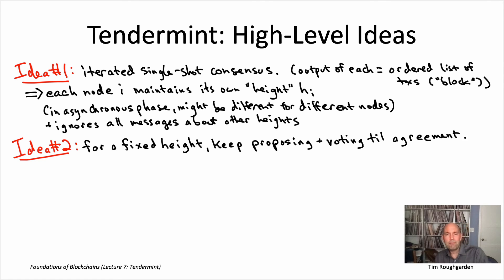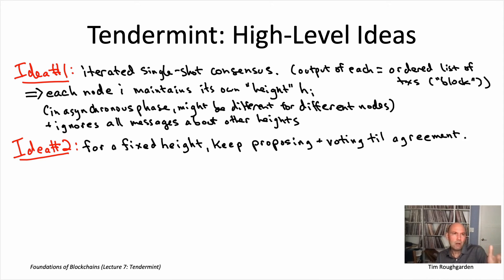Nodes may well be Byzantine, so the proposer for a given round might be Byzantine and mess everything up. That's why you want rotating leaders — to make sure that reasonably frequently, we have an honest node kicking off the process of trying to reach agreement.